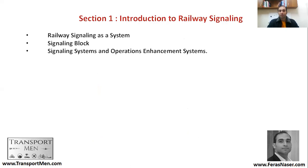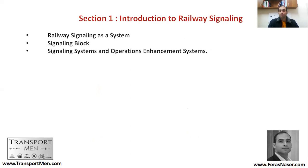Introduction to railway signaling. In this section, we'll talk about railway signaling as a system, signaling blocks, and then signaling systems and operations enhancement systems. The railway train control system has the function of control. Railway signaling and train control specification enter into that function, along with current telecommunication infrastructure, the railway infrastructure, operation specifications, natural resources, staff and management capabilities, supplier capabilities, and availability of funding, to end up with a proper railway traffic and timetable.